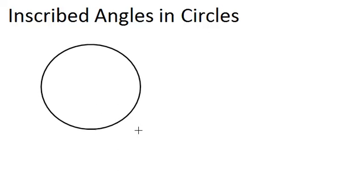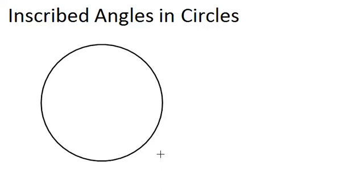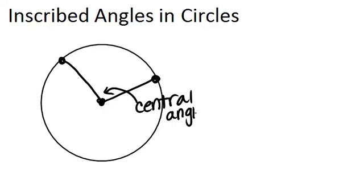First, let's review what a central angle is. If you have a circle, a central angle is the angle formed by the center of the circle and two points on the circle. So this would be one example of a central angle. And remember that the measure of the arc that is intercepted, so this arc right here, is always the same measure as the central angle here.